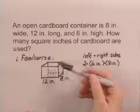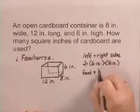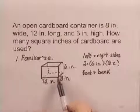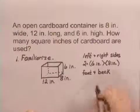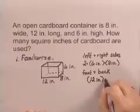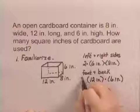We also have the front and the back of the box. So if we look at the front and the back, those are the same size. It's 12 inches long, 6 inches high. So we would have 12 inches times 6 inches, and again there are 2 of those.